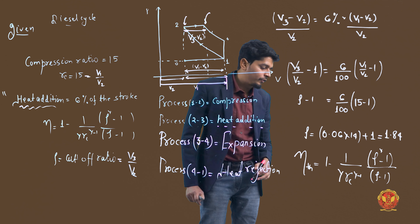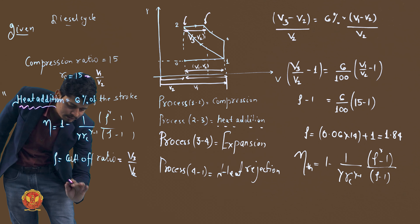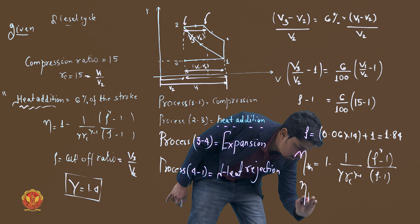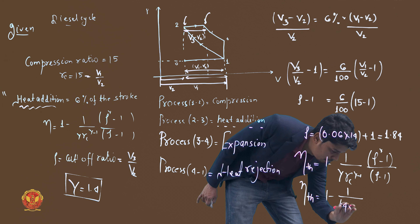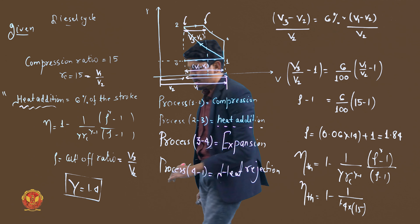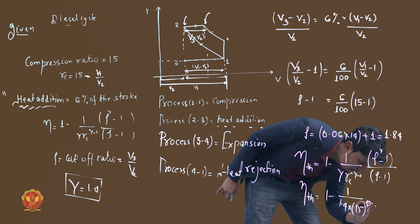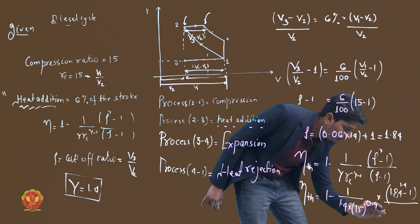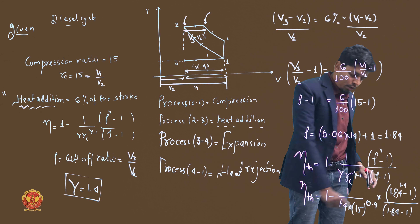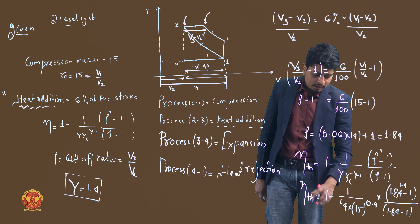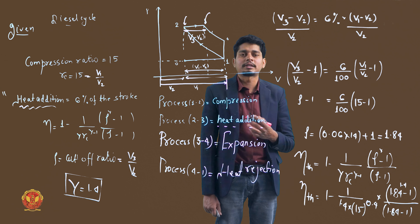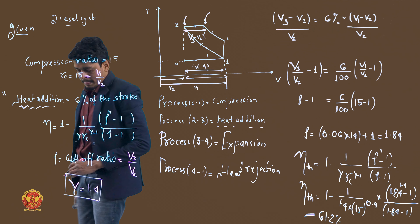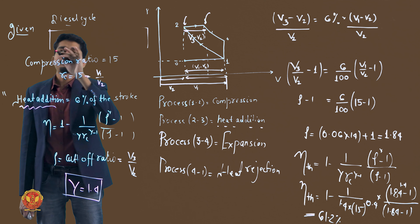Substituting values: compression ratio = 15, and since this is an air standard cycle with gamma not given, we use gamma = 1.4 always. So: thermal efficiency = 1 minus [1 / (1.4 × 15^0.4)] × [(1.84^1.4 − 1) / (1.84 − 1)]. After calculating, the thermal efficiency comes out to approximately 61.2%.